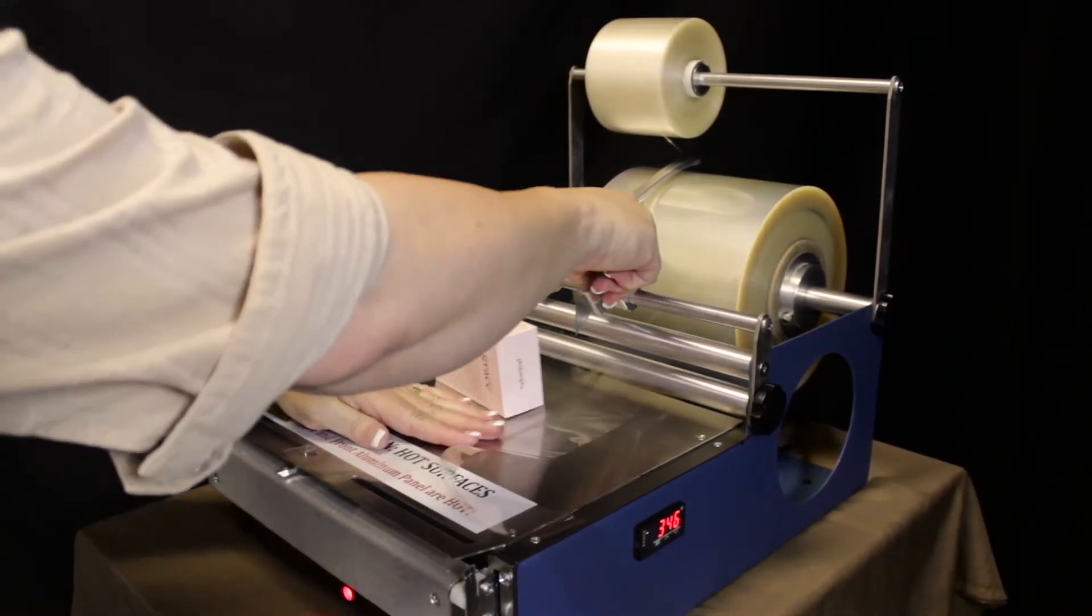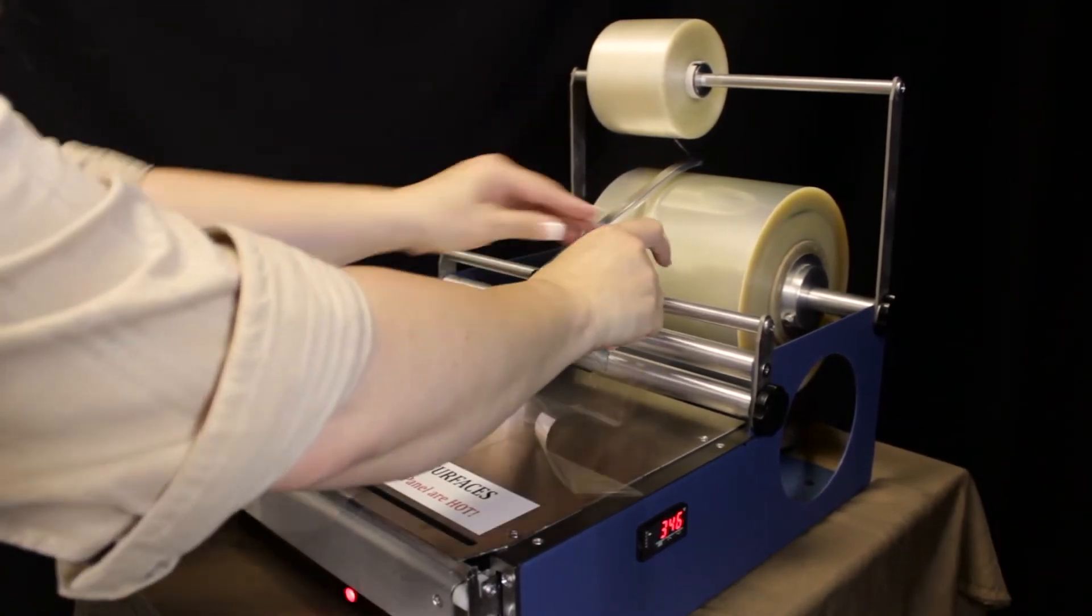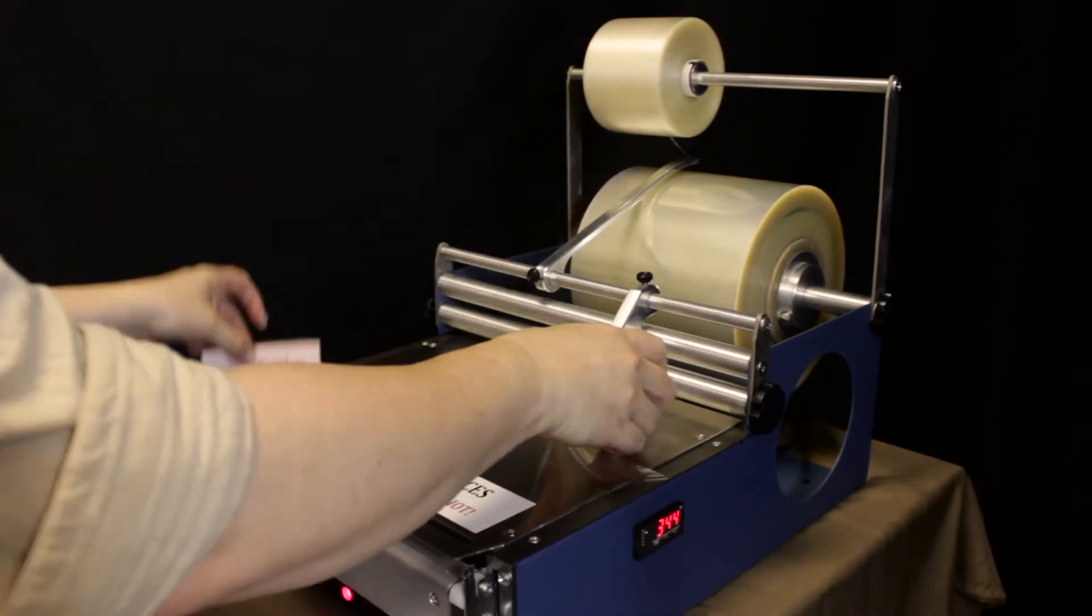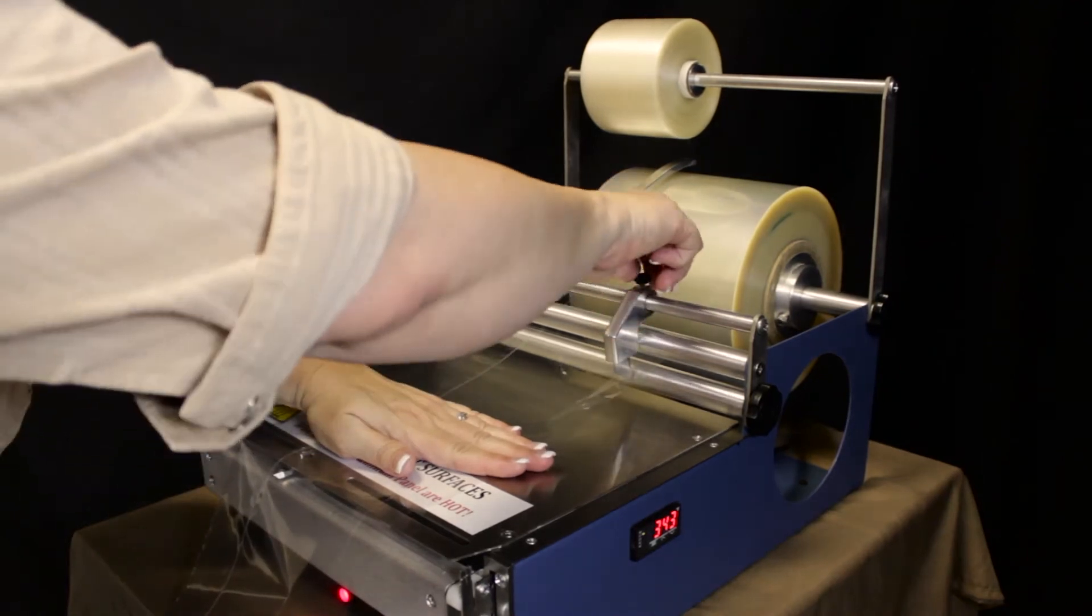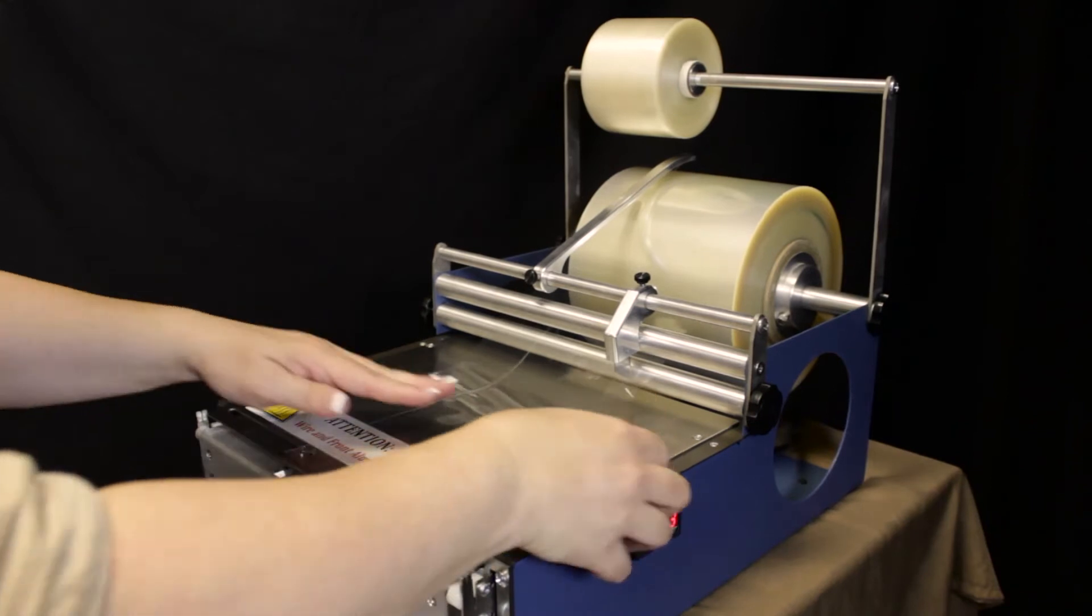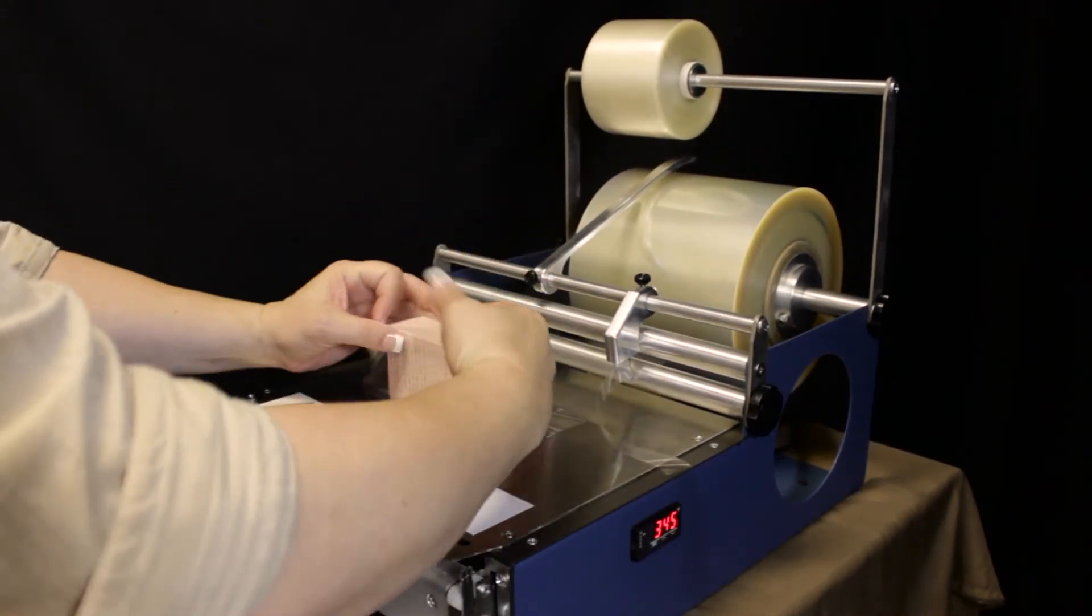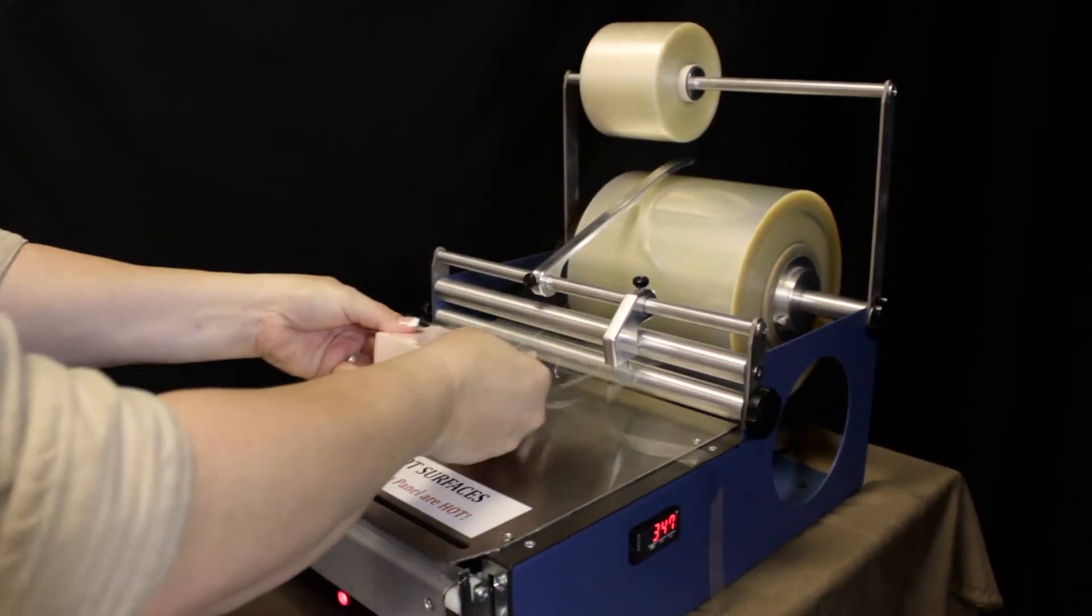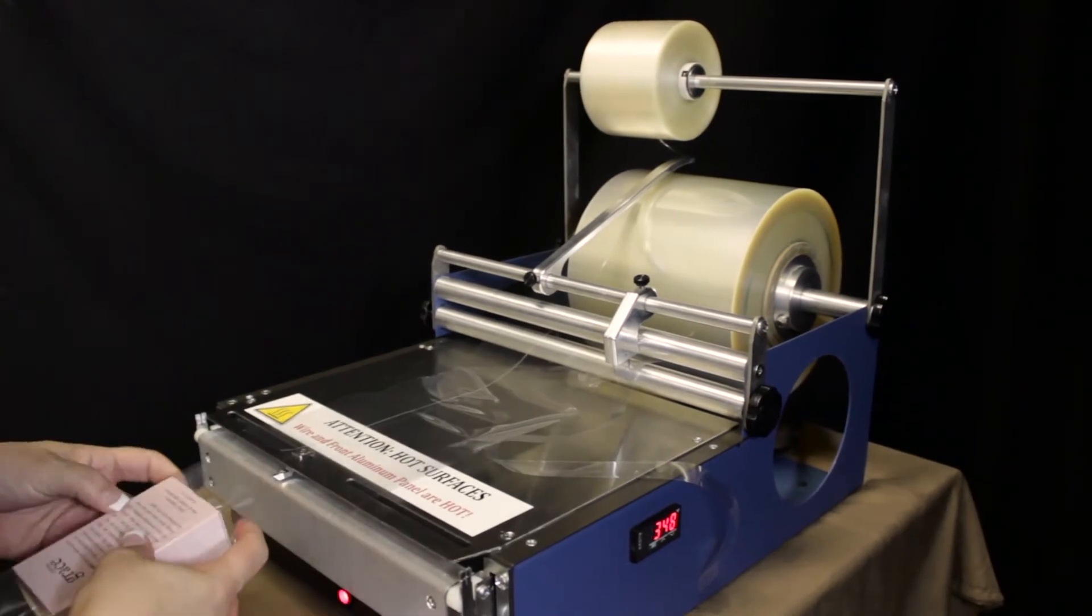And now we're going to do a perfume bottle, perfume box rather. Need this one to be a little bit wider, so we'll move our cutter piece, tighten that up. And again, we're using the same roll of film for all of this. Same wrapping techniques we'd be using.